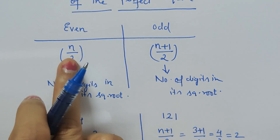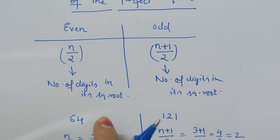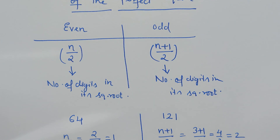So this is how these formulas are used: for an even-digit perfect square use n/2, and for an odd-digit perfect square use (n + 1) / 2. These give the estimate of the number of digits present in the square root. Thank you.